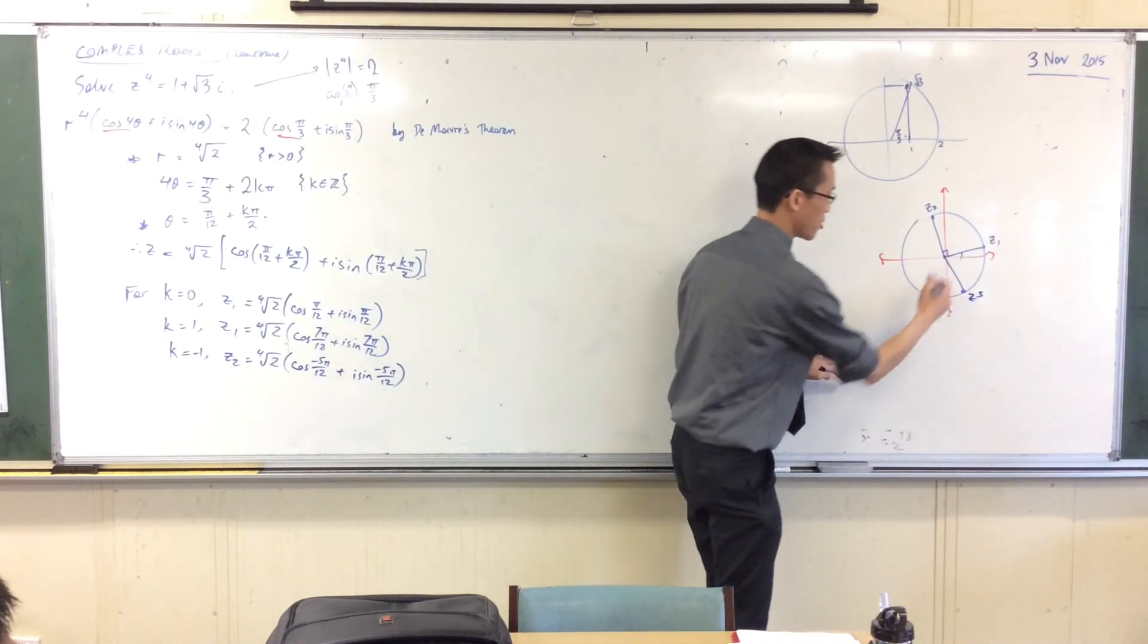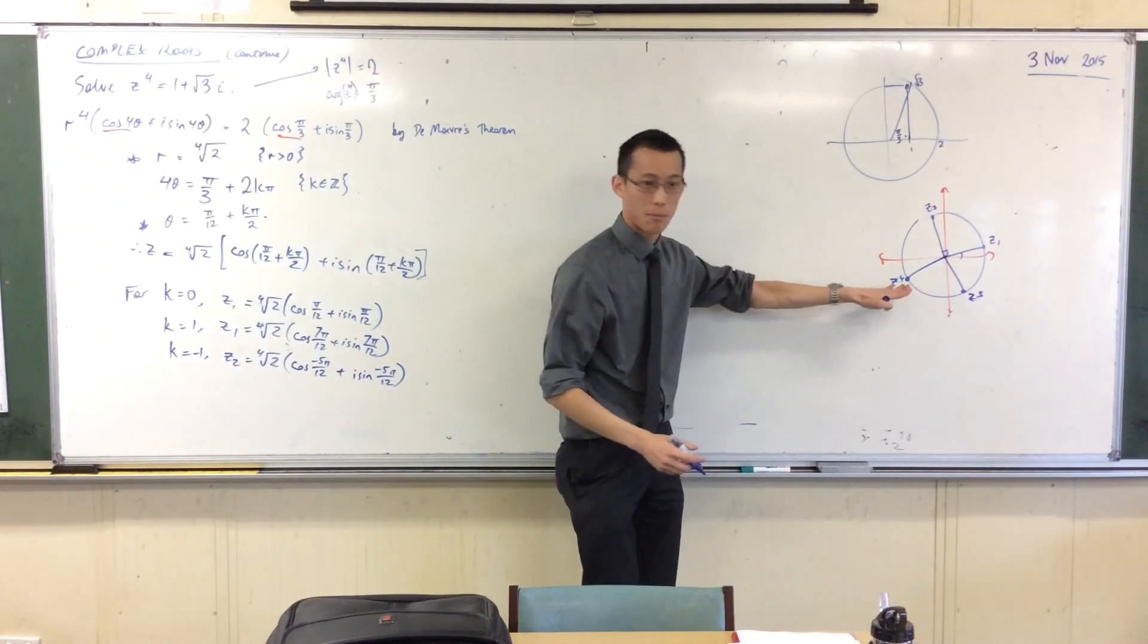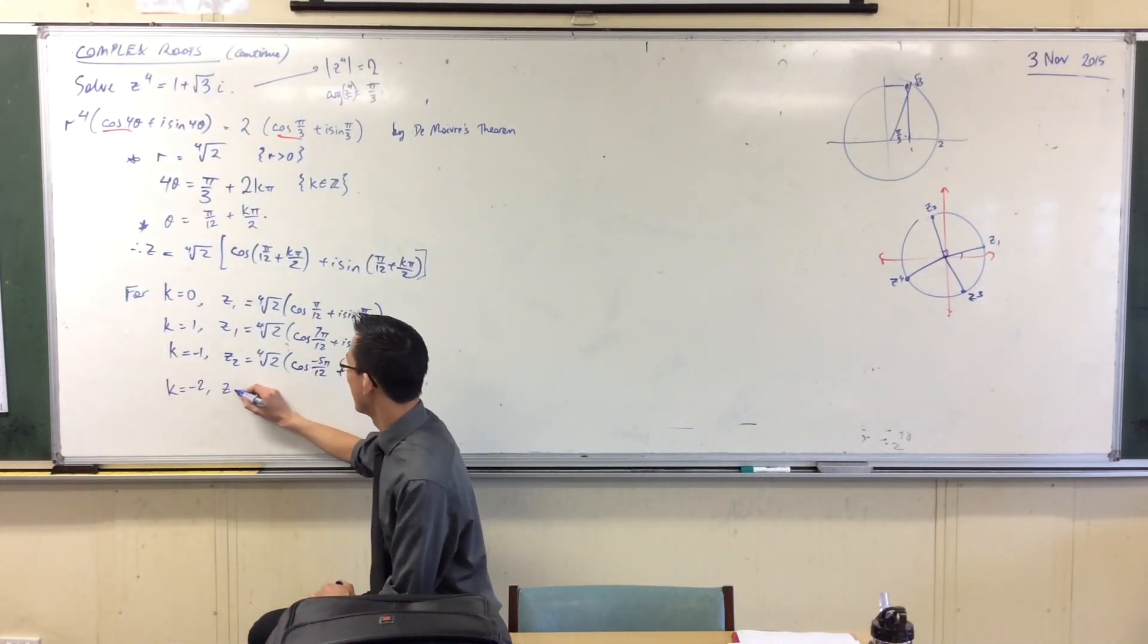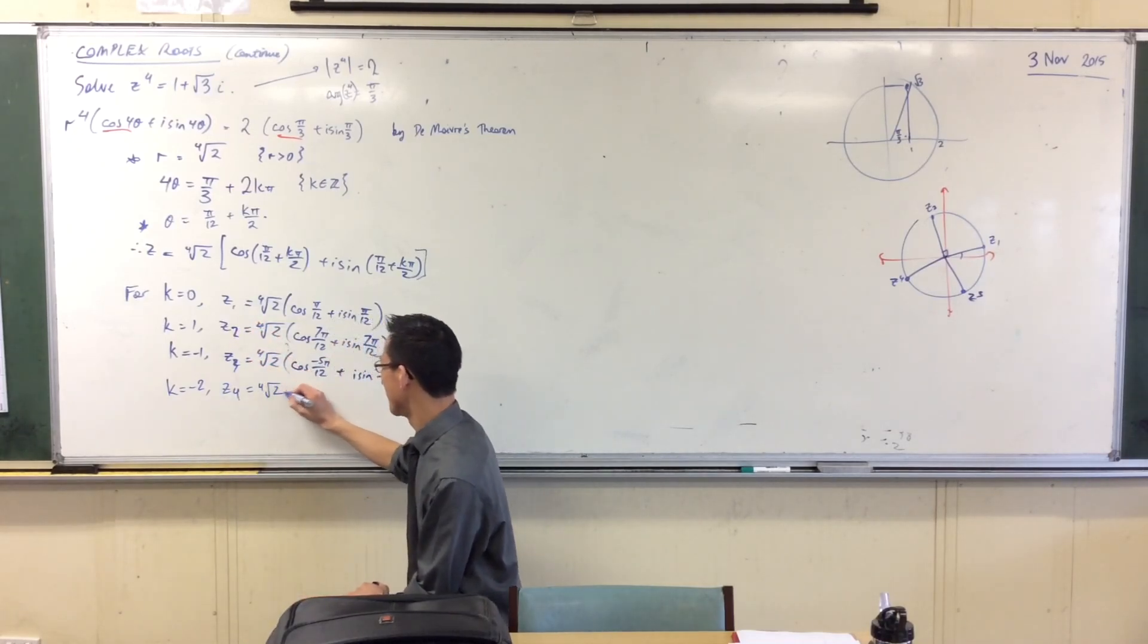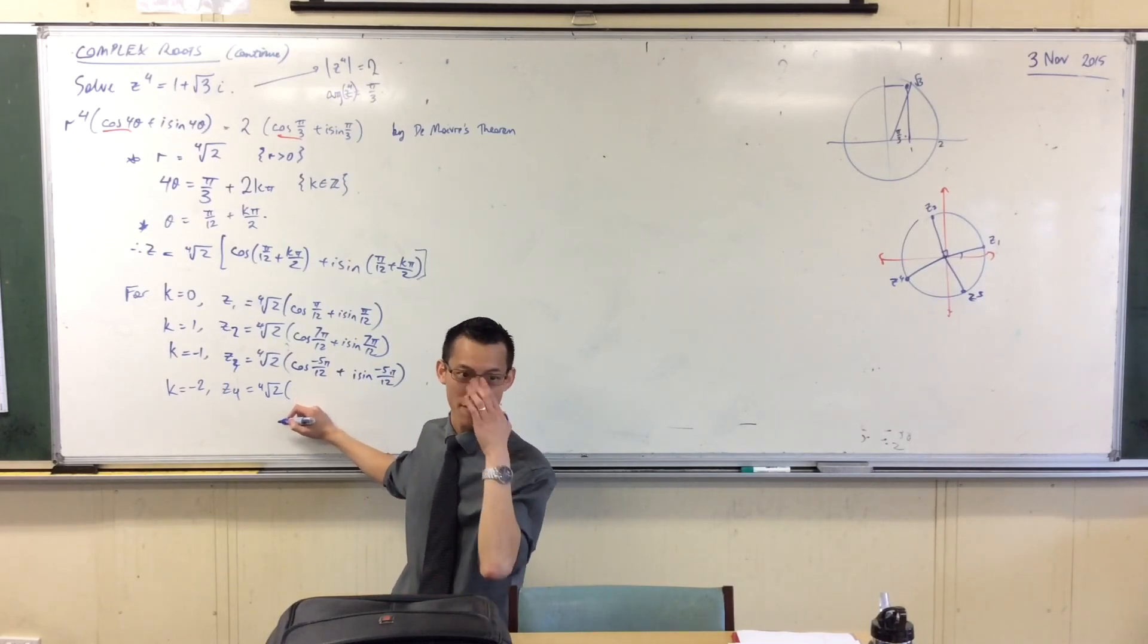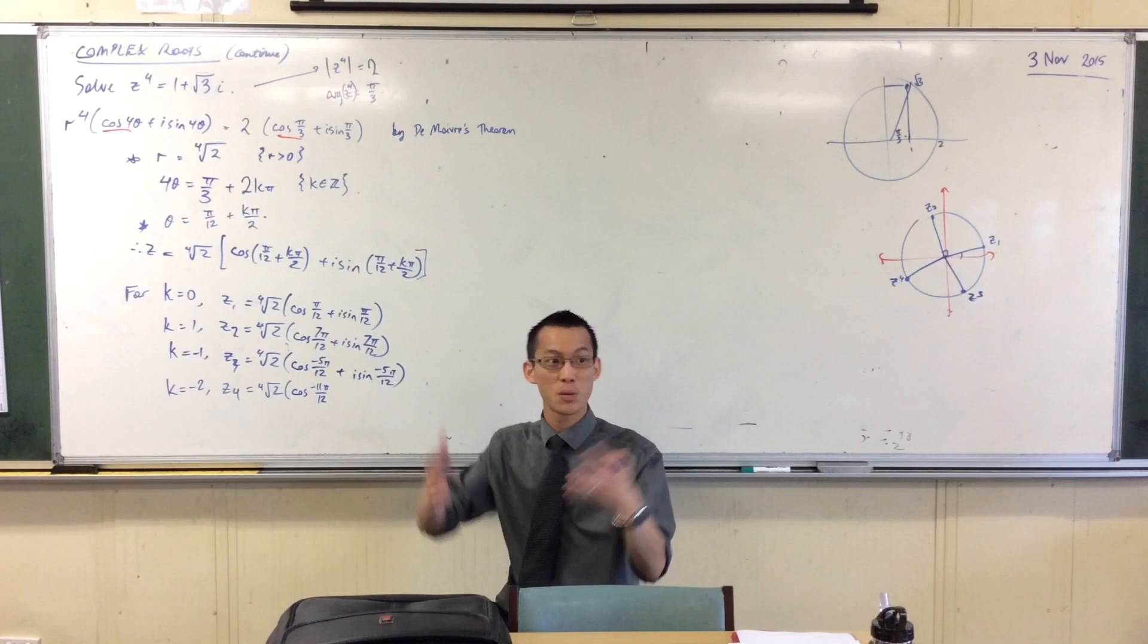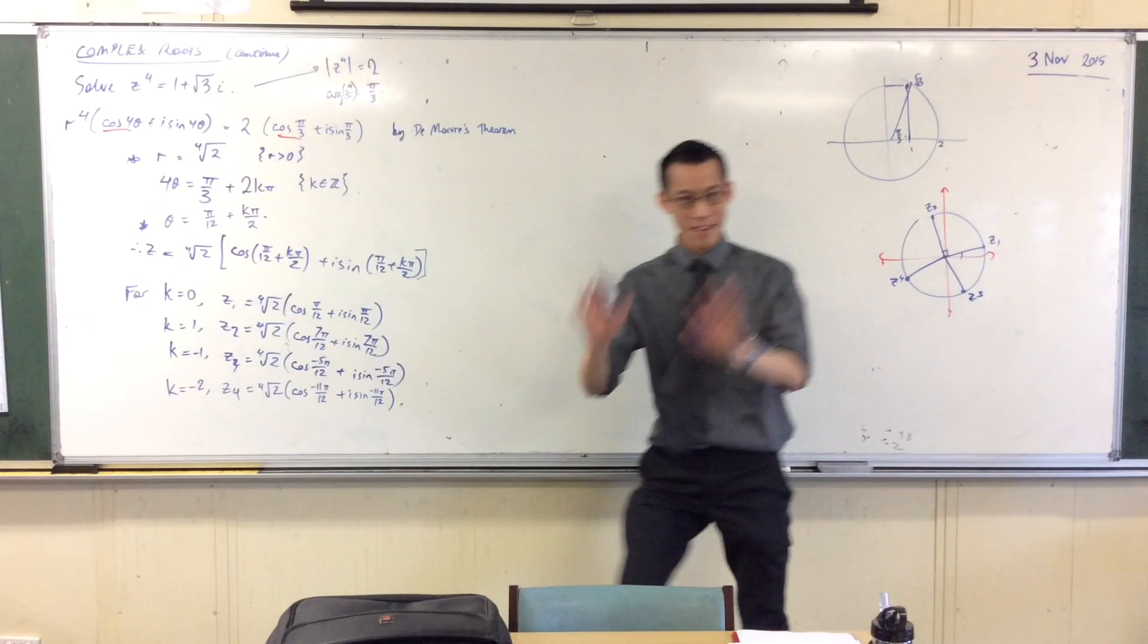And just quickly go ahead, you can predict z4 is going to be over here, and it's going to be down pi on 12. So you might be able to already predict what that answer is going to be. k equals negative 2. It's the fourth root of 2 times, now I'm subtracting another 6 pi on 12, so I should have negative 11 pi on 12, which of course is almost at negative pi, like I'm 11 twelfths of the way there. So plus i sine of negative 11 pi on 12. Happy times.